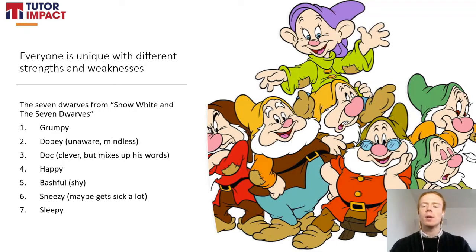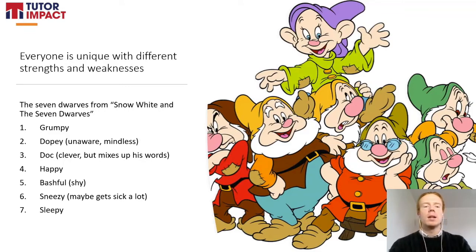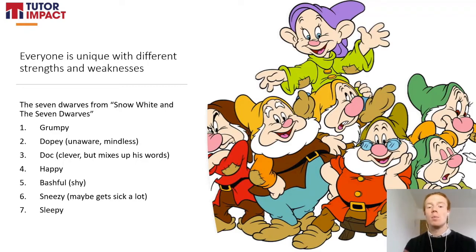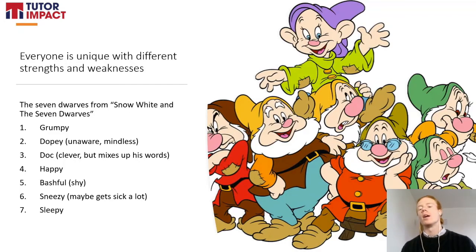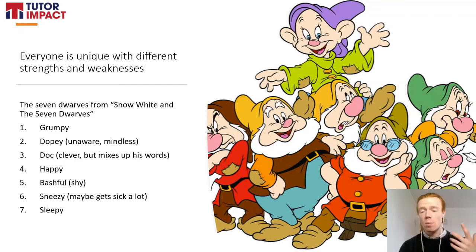There were seven dwarves that lived with a princess called Snow White, and they were all named after their predominant characteristic. There was one dwarf called Grumpy, who was grumpy. Another dwarf called Dopey, which means he was unaware, mindless — a bit stupid maybe.